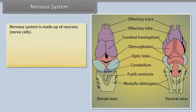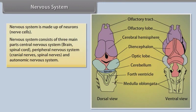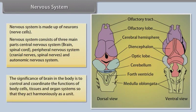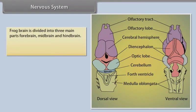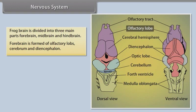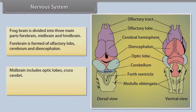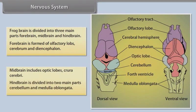Nervous System. The nervous system is made up of neurons, that is, nerve cells. The nervous system consists of three main parts: central nervous system (brain and spinal cord), peripheral nervous system (cranial nerves and spinal nerves), and autonomic nervous system. The brain controls and coordinates the functions of body cells, tissues and organ systems so that they act harmoniously as a unit. The frog brain is divided into three main parts: forebrain, midbrain and hindbrain. The forebrain is formed of olfactory lobes, cerebrum and diencephalon. The midbrain includes optic lobes and crura cerebri. The hindbrain is divided into cerebellum and medulla oblongata.